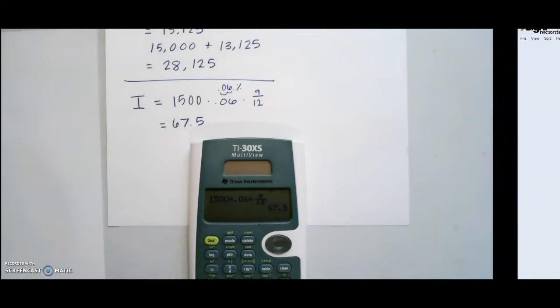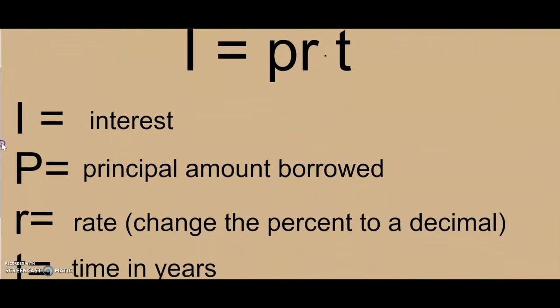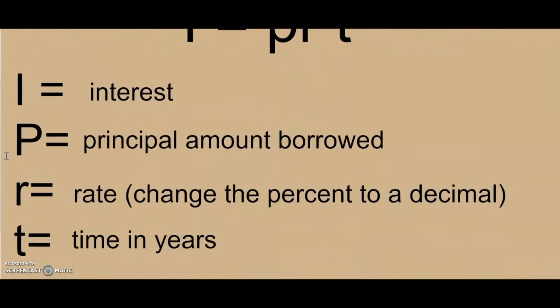As a final review, to find simple interest, use the formula I equals PRT, in which the I stands for interest, the P stands for the principal amount borrowed, the R is the rate, and the T is time in years.